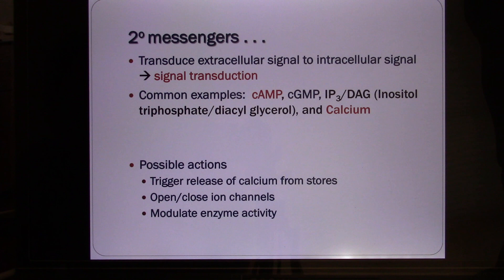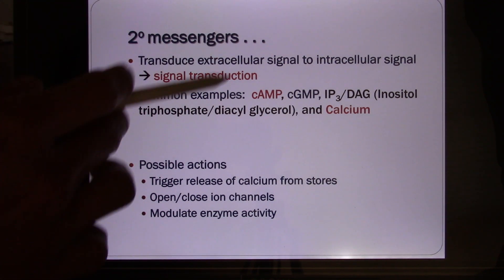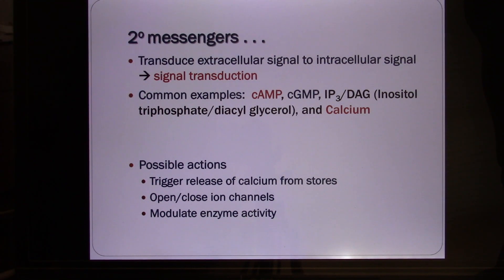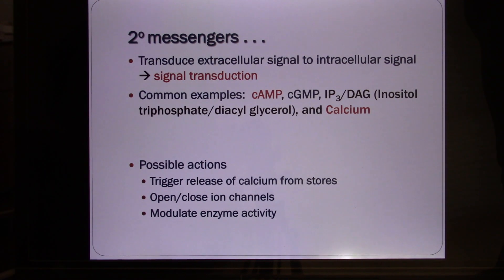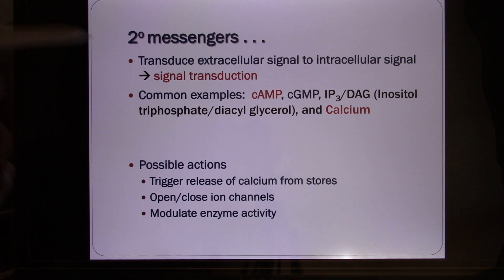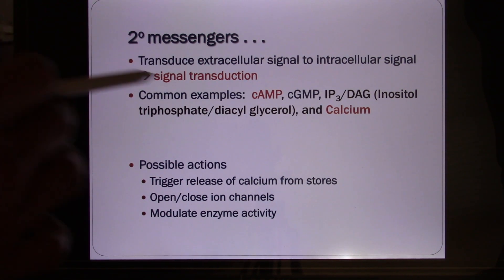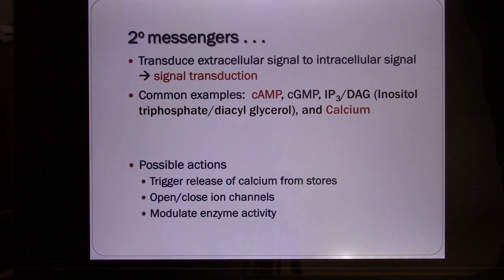We have many second messengers. This process — where the first messenger goes to talk to the second messenger, and the second goes to talk to the third — is called signal transduction. It's very important and it happens in G-protein coupled receptors. There are several second messenger systems, each with different second messengers.